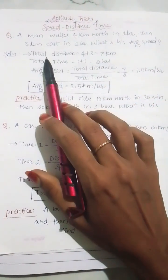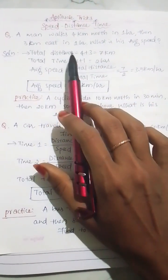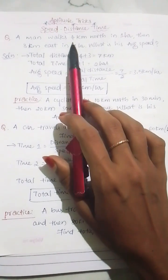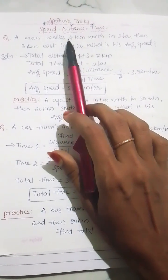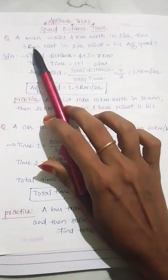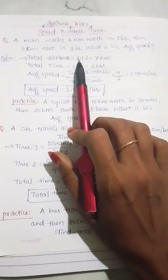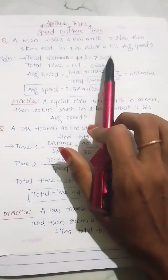Let us calculate this. The total distance he walked is 4 km north and 3 km east. Let us take that: 4 plus 3 is equal to 7 km.